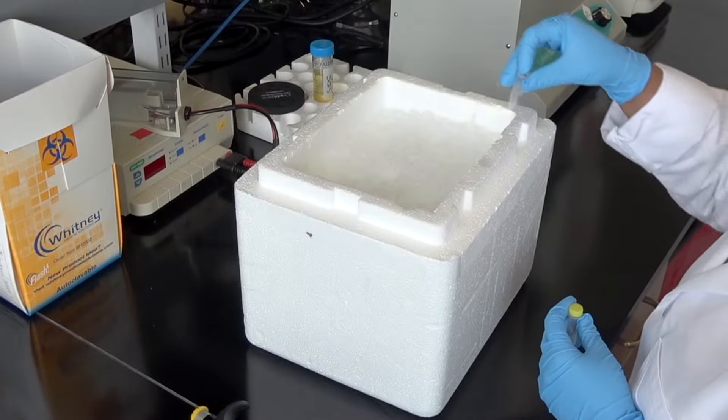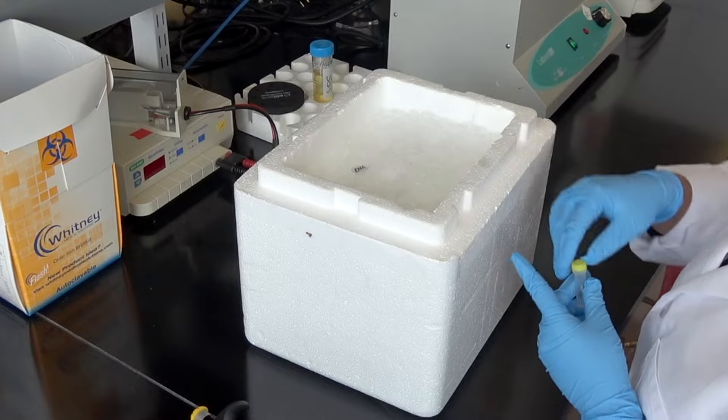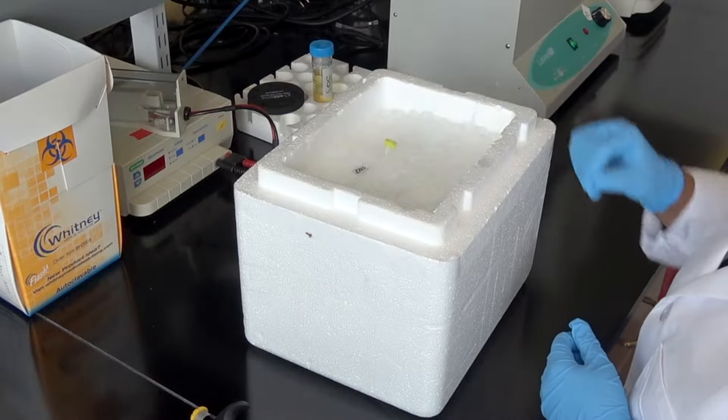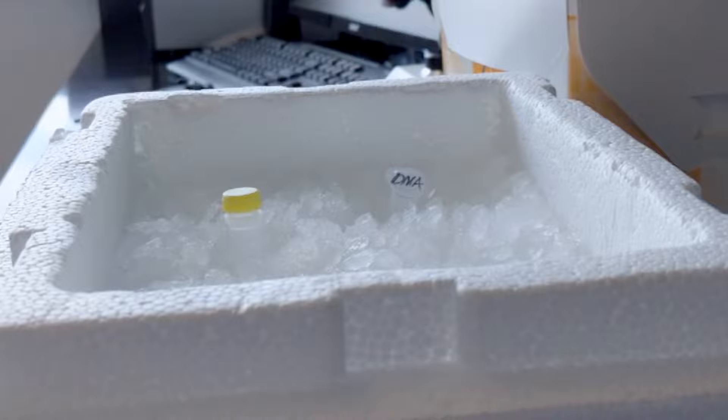To start the transformation process, thaw an aliquot of frozen chemically competent cells on ice for 30 minutes. There are several different types of chemically competent cells available commercially. You can also make your own using commercial kits or do-it-yourself protocols available online.